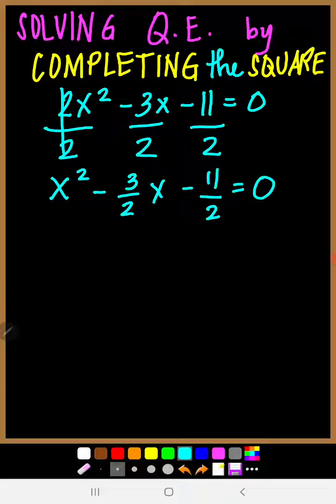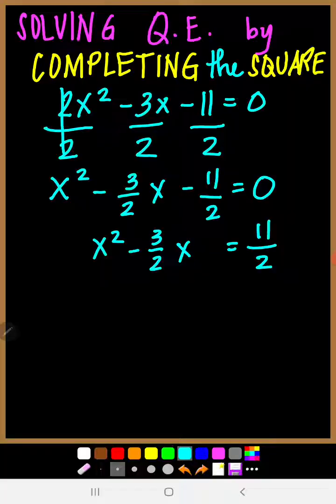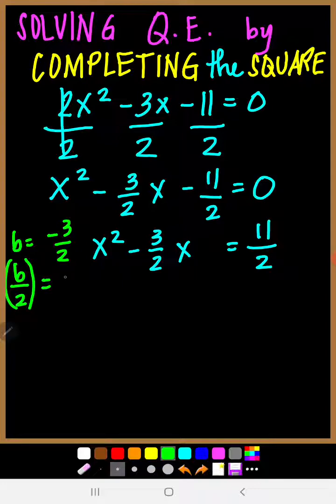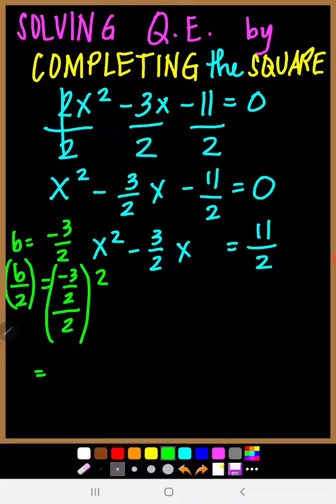We now move the constant term to the right side, so the equation becomes x squared minus 3 over 2 times x equals positive 11 over 2. Our b is negative 3 over 2. We then get the square of half of b — so negative 3 over 2, halved and squared — and the answer is 9 over 16.